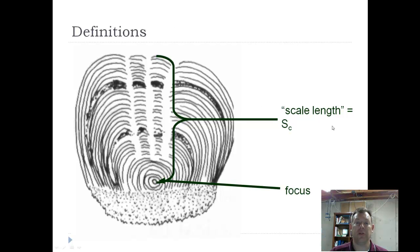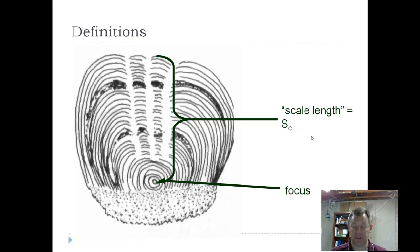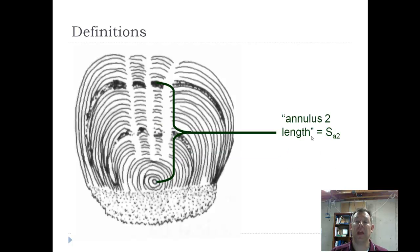We're going to be talking in terms of scales, but as I said, you can do this with otoliths or spines. So basically, you need the distance from the focus to the edge of the scale, the total length of the scale, and then you need the distance to each annulus. And so that's what this is showing here, that the distance from the focus to the edge of the scale is S sub C.